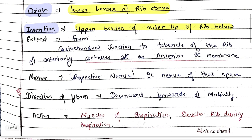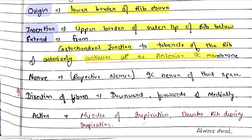This is important — extent: it extends from the costochondral junction to the tubercle of the rib, and anteriorly continues as the anterior intercostal membrane. We have talked about the anterior intercostal membrane here. Now let's talk about nerve supply, which is very easy: it is supplied by the respective intercostal nerve of that space.